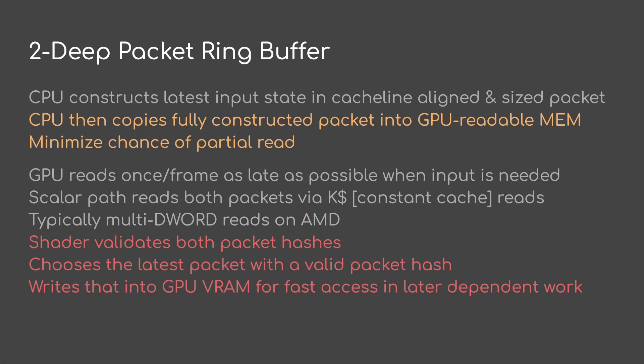I use a 2D packet ring buffer. The CPU is going to construct the latest input state in the cache-line-aligned and sized packet, and then after that's finished it's going to copy the fully constructed packet into GPU readable memory. This is to minimize the chance of a partial read by the GPU. The GPU later is going to read once per frame, as late as possible when it wants the input. This will be done with the scalar path — in my case it's going to read both packets via the constant cache.